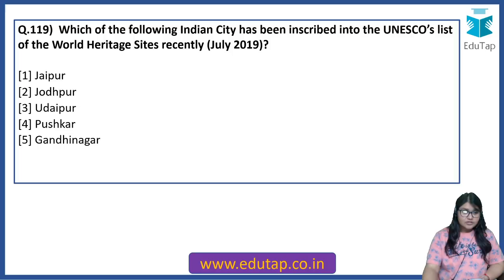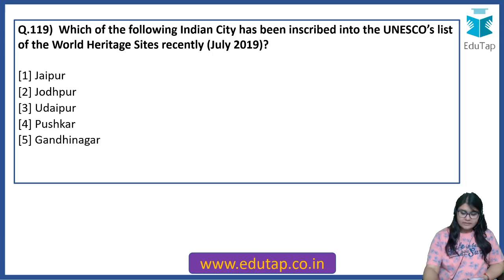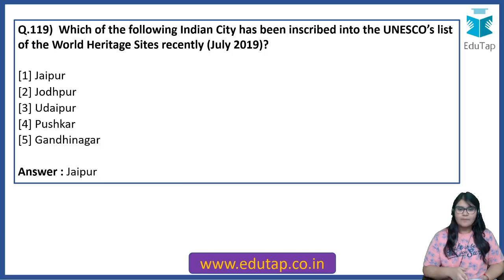Which of the following Indian cities has been inscribed into the UNESCO's list of World Heritage Sites recently — that is, in the month of July 2019? It is also called 'The Pink City.' The answer is Jaipur, the Pink City. Recently in July 2019, its name has been inscribed into UNESCO's list of World Heritage Sites.